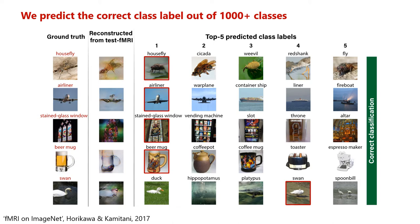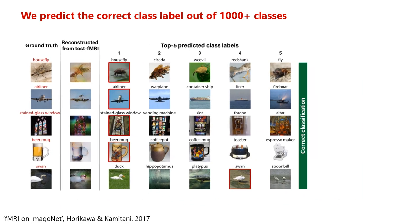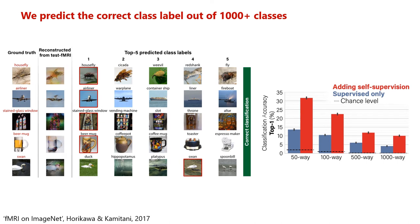We visually demonstrate the semantic classification of the reconstructed images by our method, presenting the top five predicted class labels out of more than a thousand ImageNet classes. Note that even the non-ground-truth labels are often semantically reasonable and relevant. We quantify classification accuracy for various difficulty levels — detecting the ground truth among a gallery of 50 up to a thousand classes. Even for the challenging thousand-way classification, our method scores more than twice the accuracy of the supervised-only approach and at least a hundred times better than chance level.